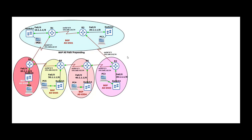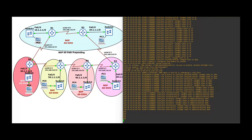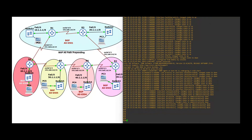This is what we are going to configure. First we will configure the IP addressing, then configure IBGP and EBGP pairings, and then we configure AS path prepending. Starting from Router 1, configure terminal.